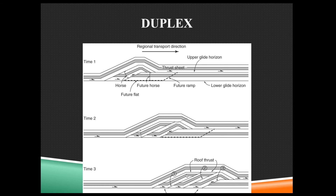This can happen like this near the surface, but it can also happen at depth where you have detachment and this glide horizon. And if there is detachment and gliding along the top as well, you can get this kind of duplex system happening underground.